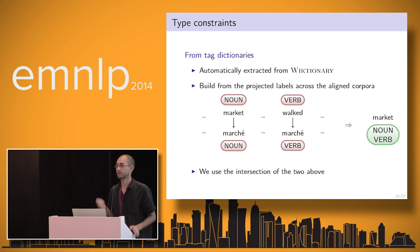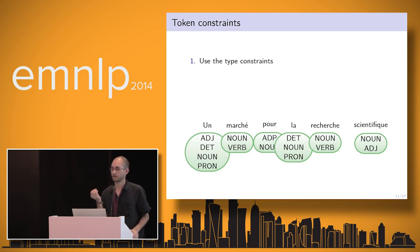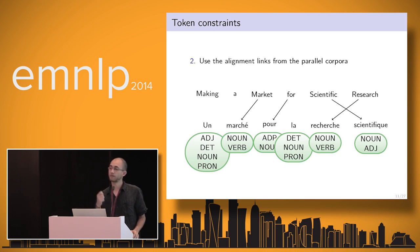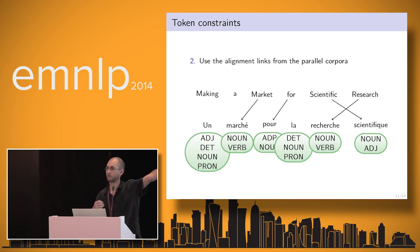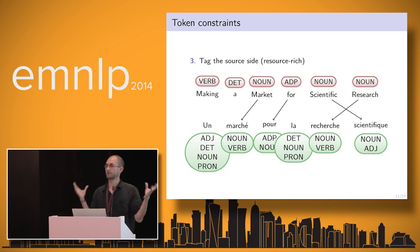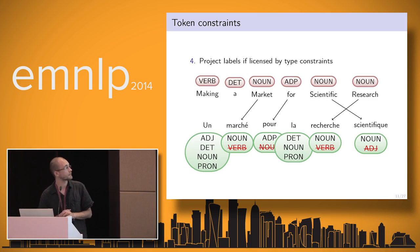We have two kinds of constraints. The first are type constraints, which are applied for every word type and are directly given by a dictionary. We can crawl a dictionary and get a dictionary tag for almost any language. We can also build this dictionary directly from the aligned corpora — for example, 'market' appears many times on the source side, so we project 'noun' and get a tag dictionary for 'marché' in French. We use both dictionaries and take the intersection to build a larger dictionary.